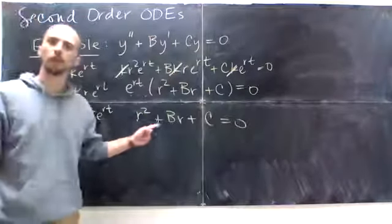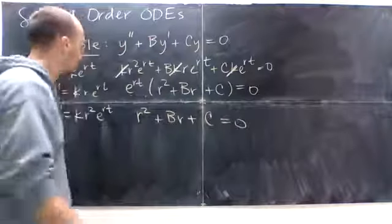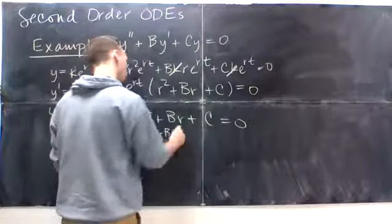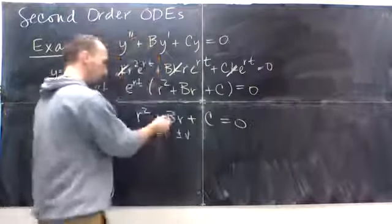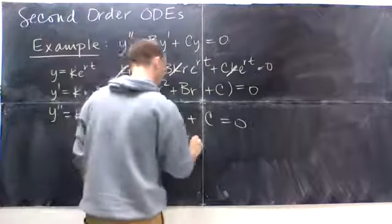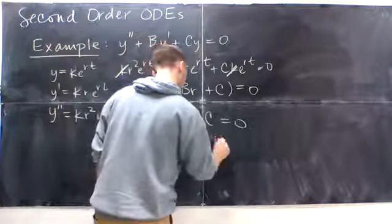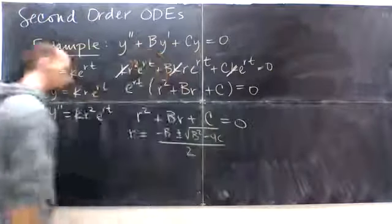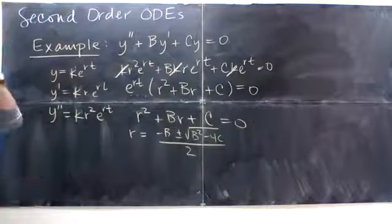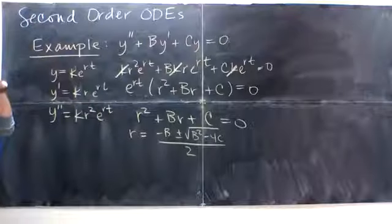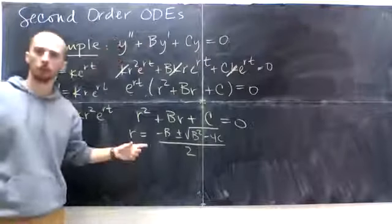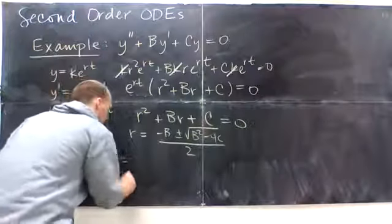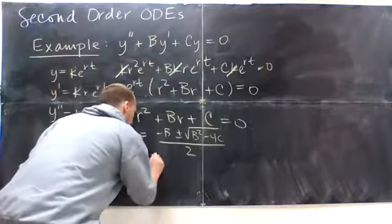We know how to solve this. We've got a formula for this. We learned it in algebra 1. It's a quadratic formula. So, we know that r is equal to negative b plus or minus the square root of b squared minus 4c all divided by 2. And this is going to solve this in general.